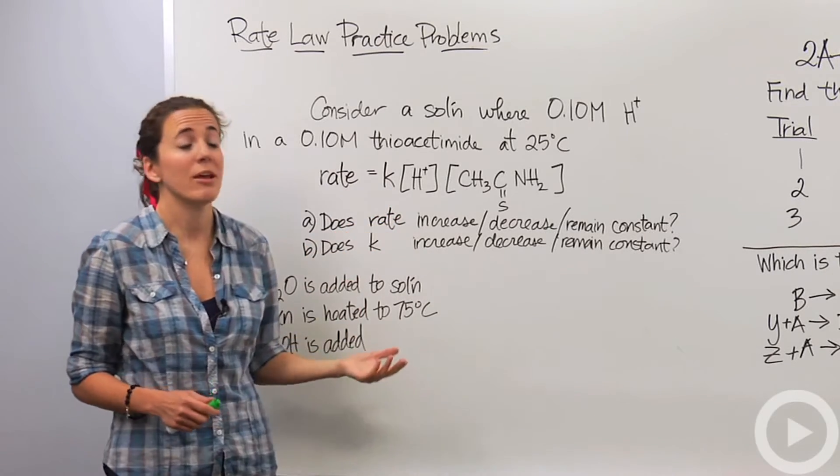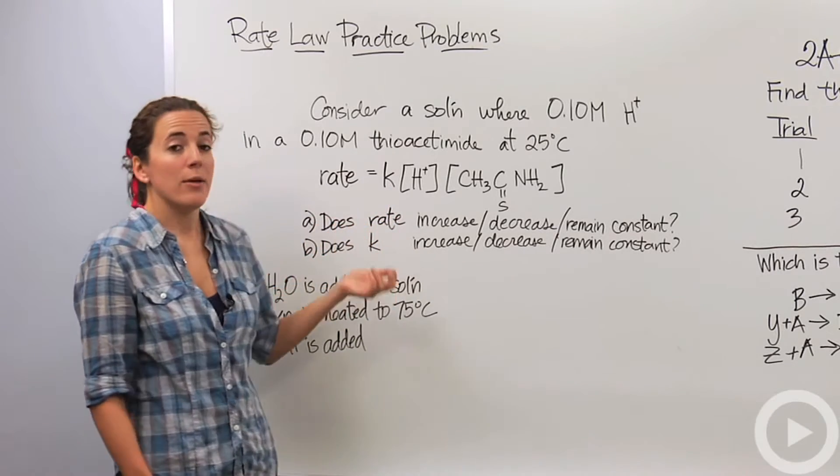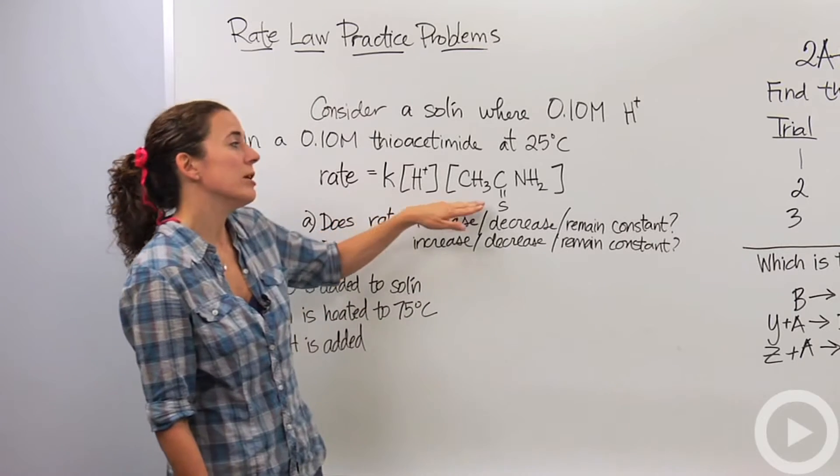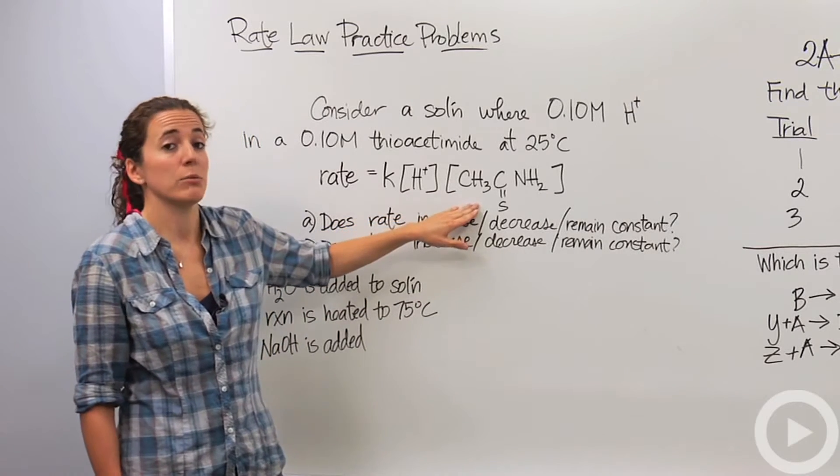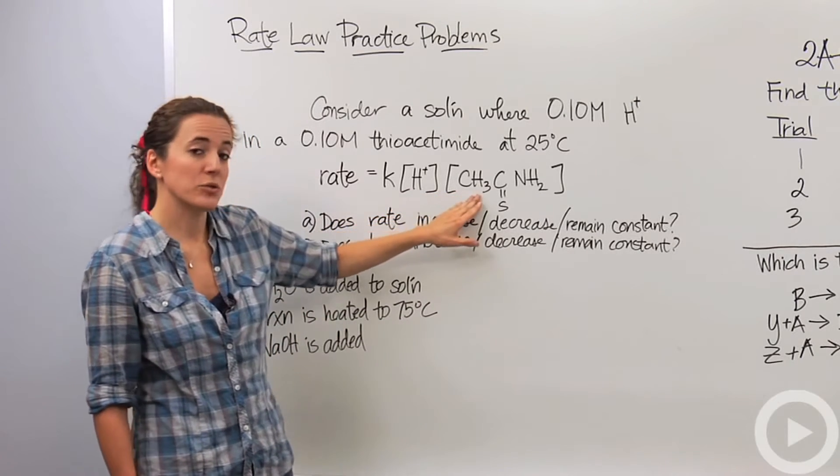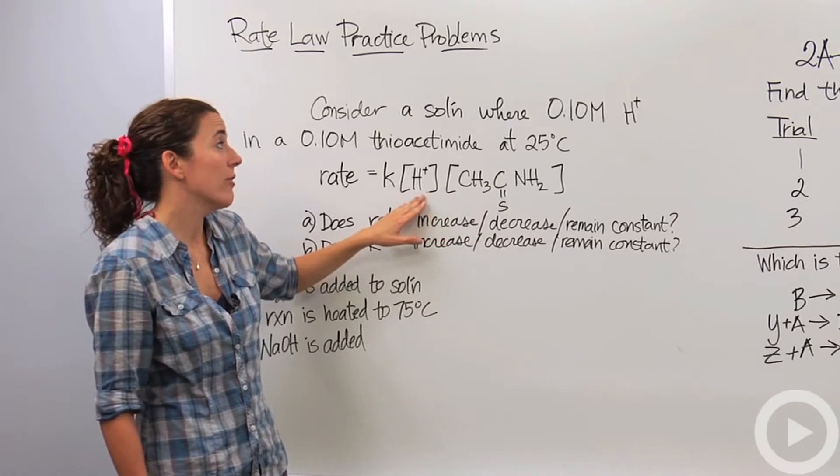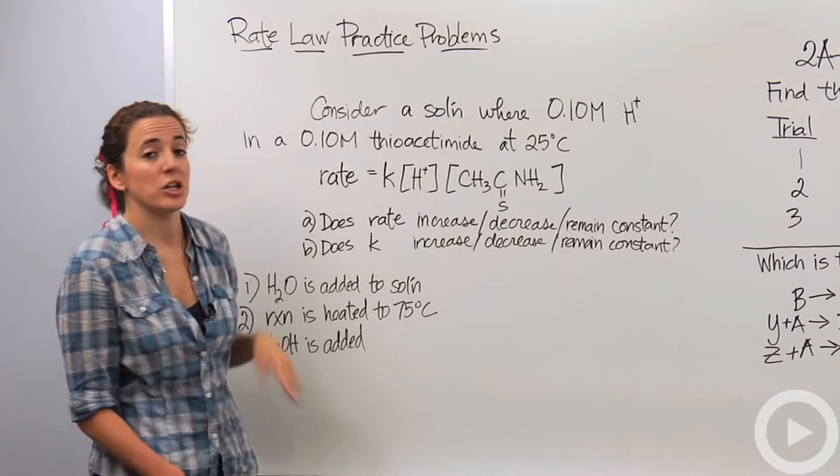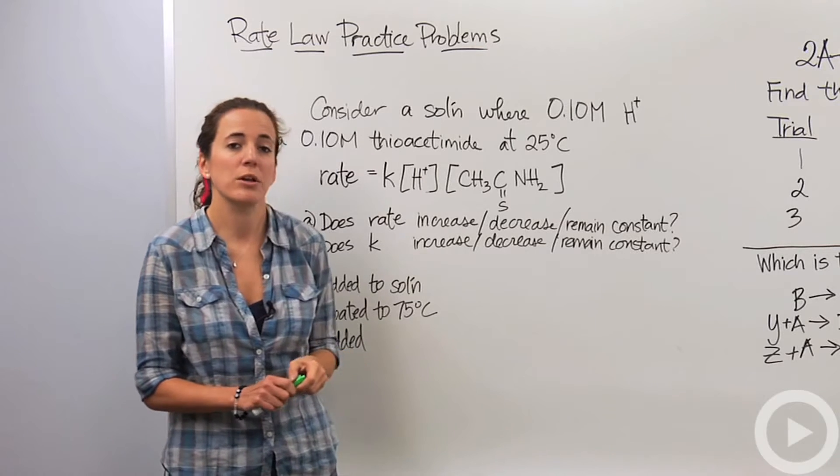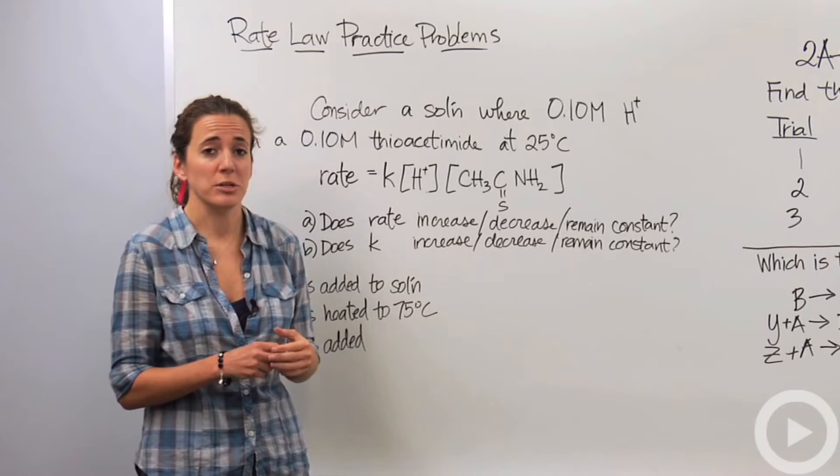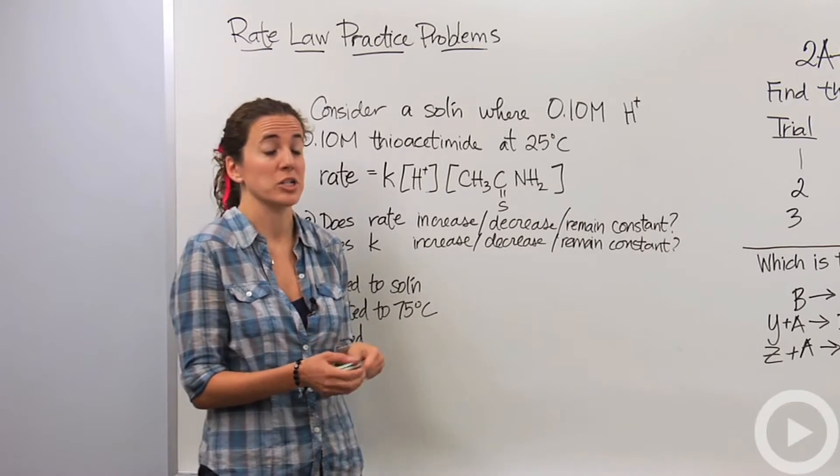The rate law constant is actually going to be the same. But what will be affected is the rate. Because we're diluting these guys, we're lowering the concentration. When we add water, we're lowering the concentration of the thioacetamide and the hydrogen ion. So the rate is actually going to be slower, which makes sense because according to collision theory, the concentration plays a major part in how fast the reaction goes.